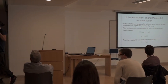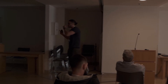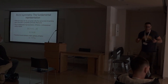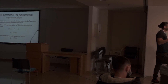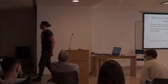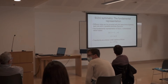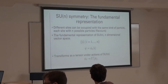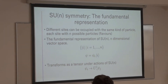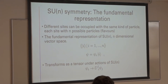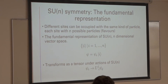Now let's allow the number of particles at different sites to be equal, and let's look at each site independently. We can say that each site is an N-dimensional complex vector space that transforms under the fundamental representation of SU(N). Each basis element corresponds to a possible particle flavor. A general vector can be written in this way, and under SU(N) transformations it transforms as a tensor.